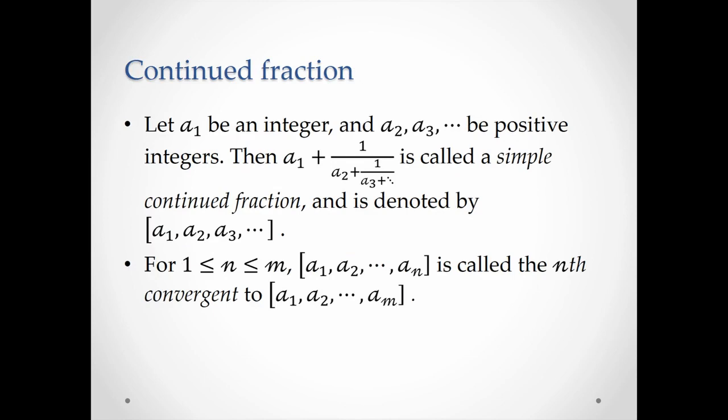People made use of continued fractions and they successfully solved the quadratic Pell's equation. Suppose a₁ is an integer and a₂, a₃, and so on are positive integers, then a fraction of this form is called a simple continued fraction. We call this fraction the nth convergent to our continued fraction, which is an approximation of the continued fraction.